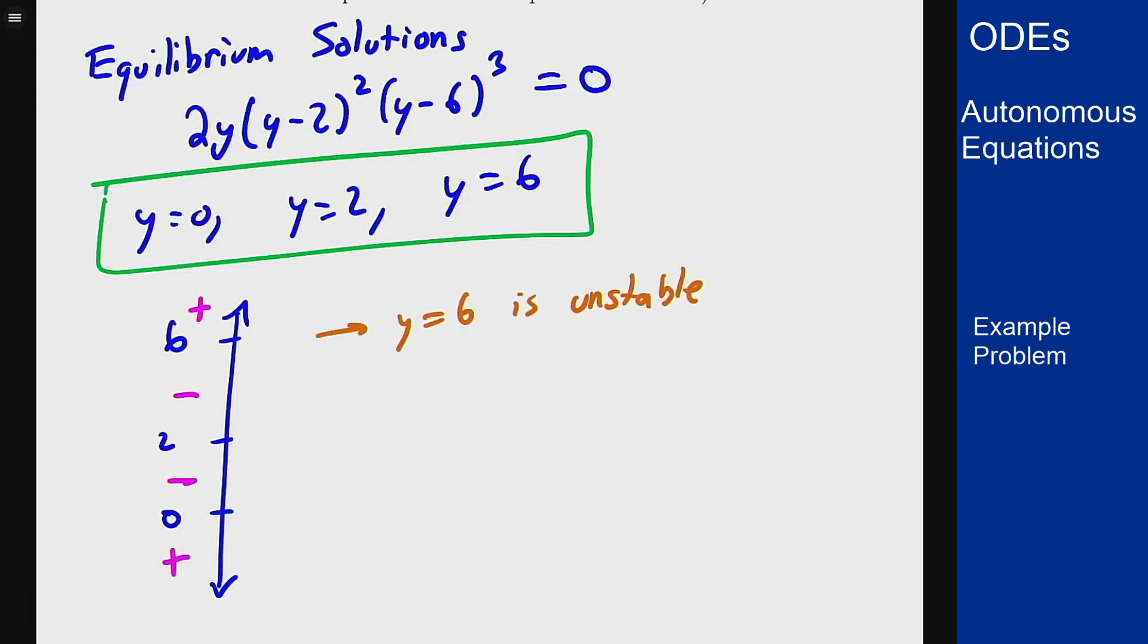For 2, we see that the solutions that are above are coming down into 2, which is good. The solutions that are below are also diving down, so they're going away. This is semi-stable. And for 0, the above solutions are coming down to it, and the bottom ones are coming up to it. That means this is an asymptotically stable equilibrium solution.